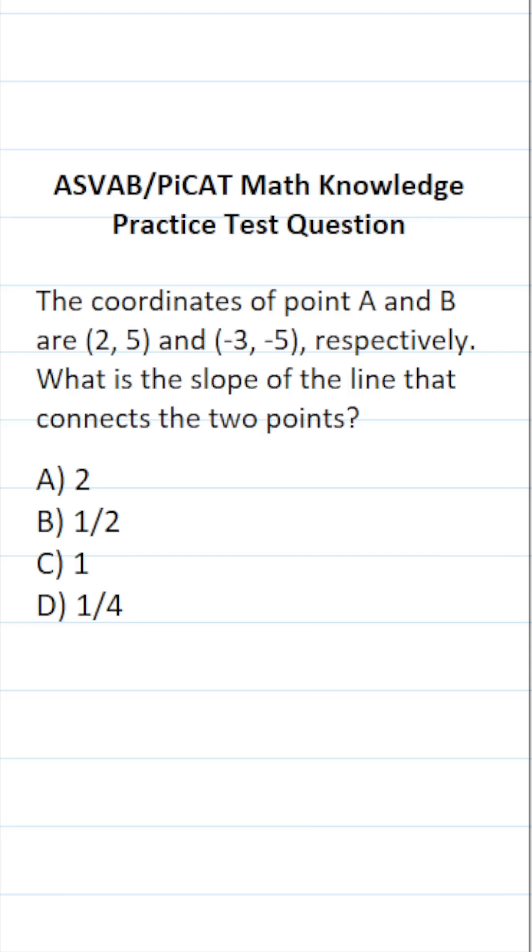This math knowledge practice test question for the ASVAB and PICAT says, the coordinates of point A and B are 2, 5, and negative 3, negative 5, respectively. What is the slope of the line that connects the two points?